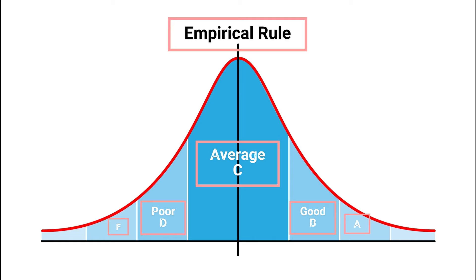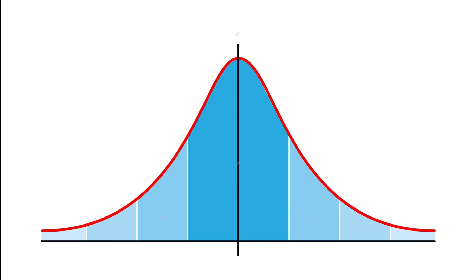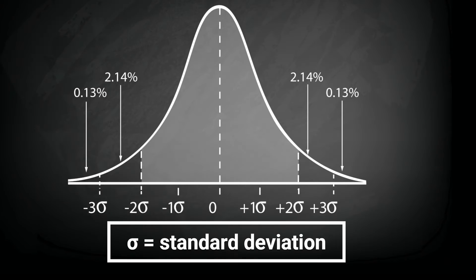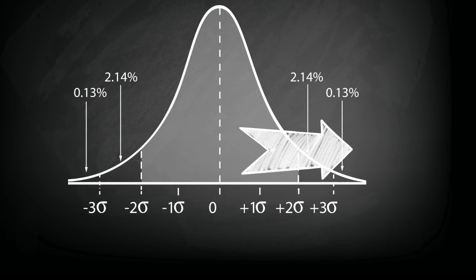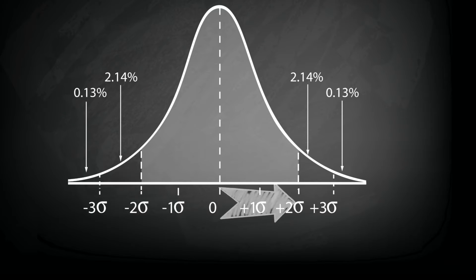In order to understand what an empirical rule is you need to know what a standard deviation is. But very basically a standard deviation is a unit of measurement. It's how we measure a bell curve from the mean out to the edge of the curve. So when we're talking about one standard deviation or two standard deviations or three, these are just units of measurement.